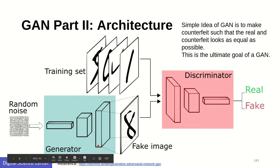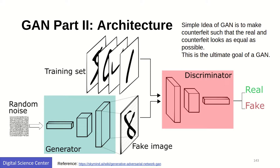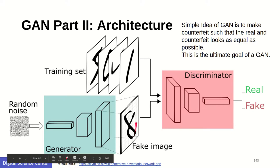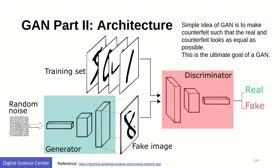The generator learns to improve its fake generating engine so that it creates a number — in this example, a number which is real and equal to number 8. This is not exactly the number 8, but it is close enough. The discriminator says this is close to number 8, and at that point the training stops and the model is generated. The generator becomes a better trained model through the feedback from the discriminator.